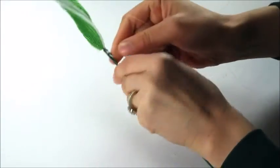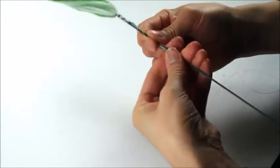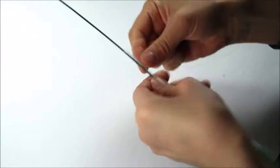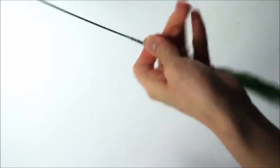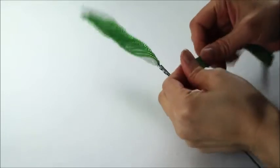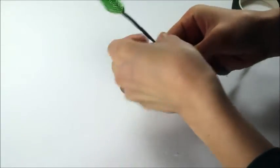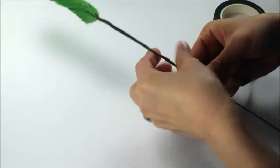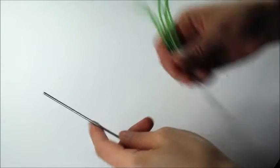You can use any type of thread you want, but I'm using Nimo beading thread. That's just what I have a lot of excess of. Then break it, make a knot. It doesn't have to be tight because we're going to put floral tape over it. So take your floral tape, just wrap it around. And let's set this aside and get started with the assembly of the main flower.